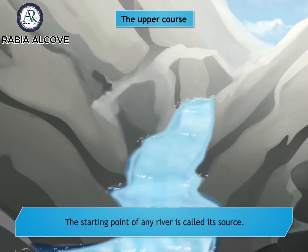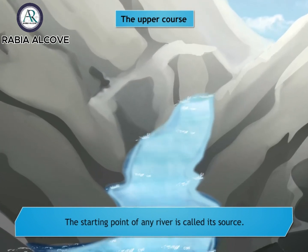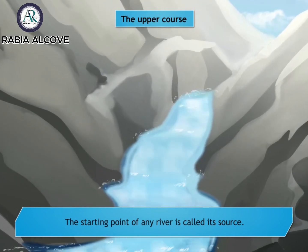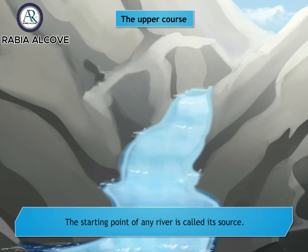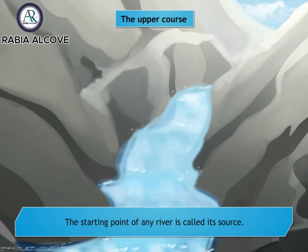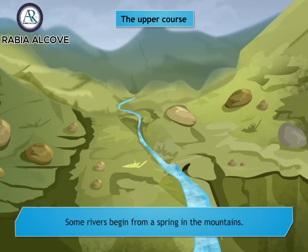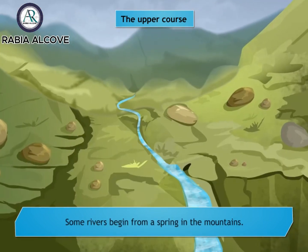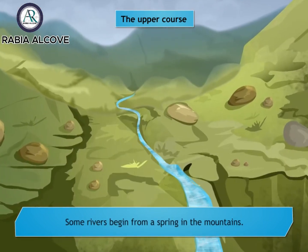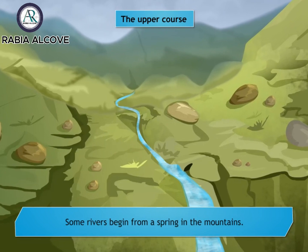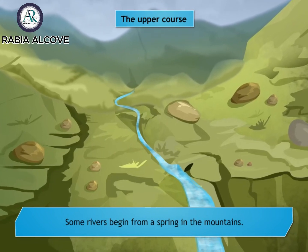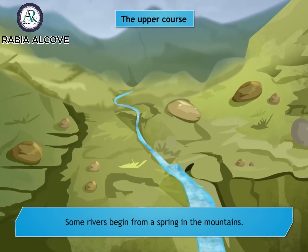The starting point of any river is called its source. The source of a river is usually a high place like hills and mountains. It may begin from a lake, a spring, or a glacier.